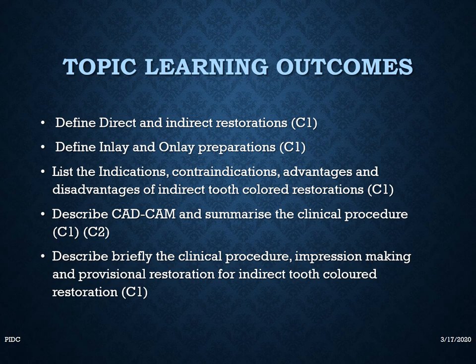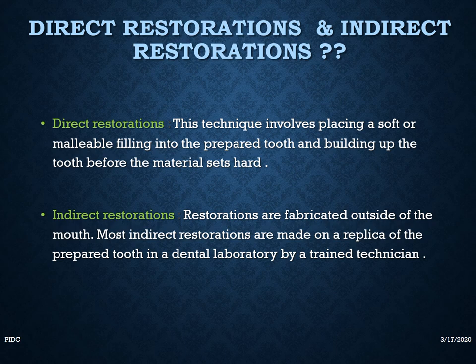When we talk about indirect tooth color restorations, you should know about what is direct and indirect restoration. Direct restoration is the technique which involves placing a soft or malleable filling into the prepared tooth and building up the tooth before the material sets. A typical example of direct restoration is composite restoration, GIC, or amalgam — where you directly place the material in the patient's mouth and cure it, so the material sets inside the patient's mouth.